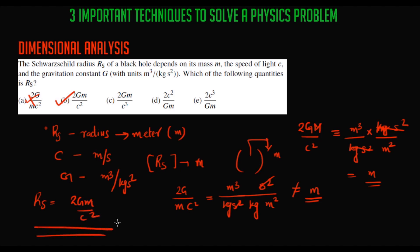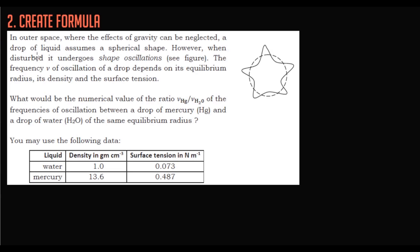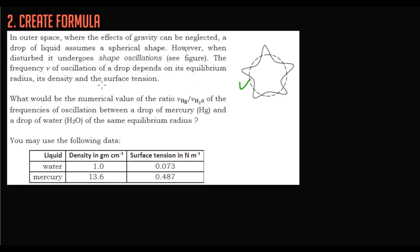The next method is very important — it's actually a derivative of dimensional analysis but very powerful. We call it 'creating a formula.' The question: in outer space where gravity can be neglected, a drop of liquid assumes a spherical shape. When disturbed, it undergoes shape oscillations.